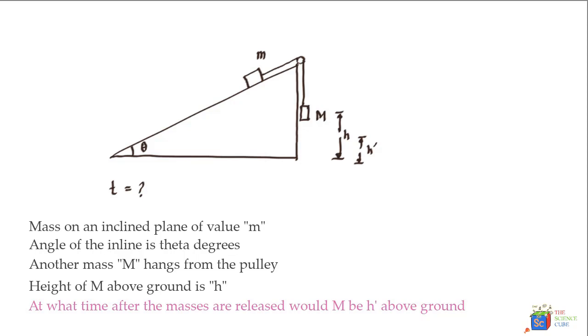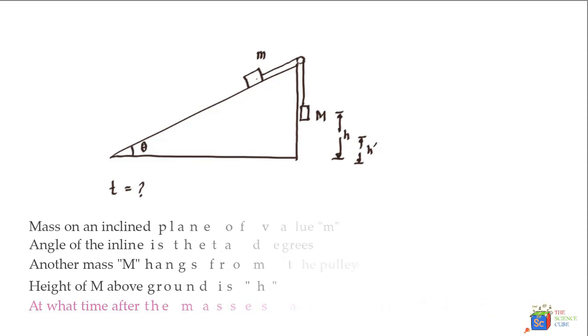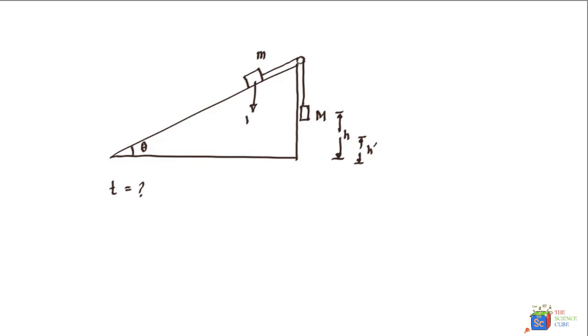So this is the diagram we have and then we can go ahead and mark all the forces. The first obvious force would be mg acting in downward direction for both the masses. So this is mg for the smaller mass and this is mg for the larger mass. You can also go ahead and mark the other forces which would be the components of mg in this direction and in the direction along the inclined plane. If this is theta then simple geometry will tell you that this is also theta and then you can mark this force as mg sine theta and this one as mg cos theta.